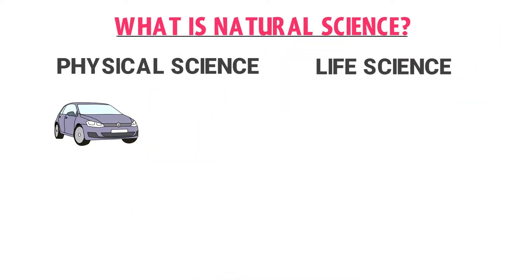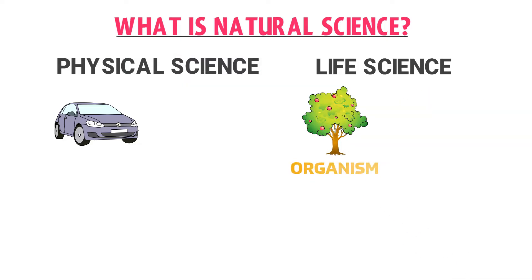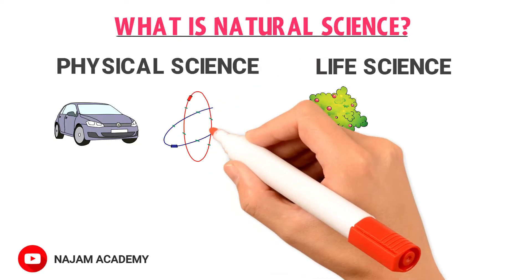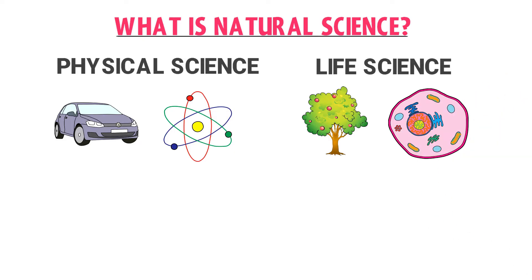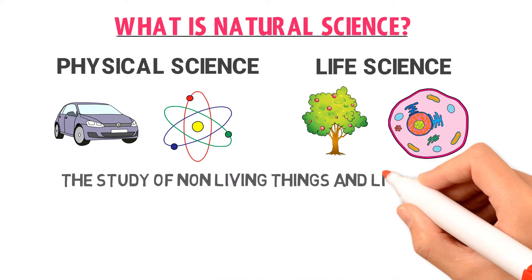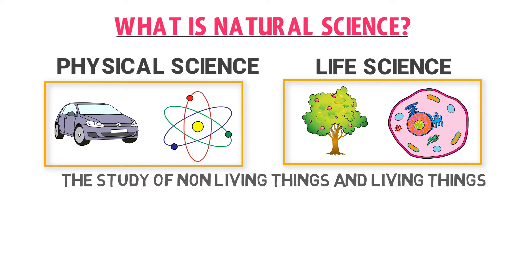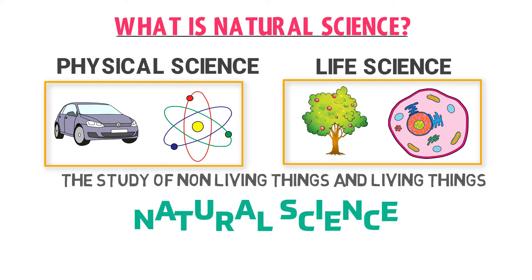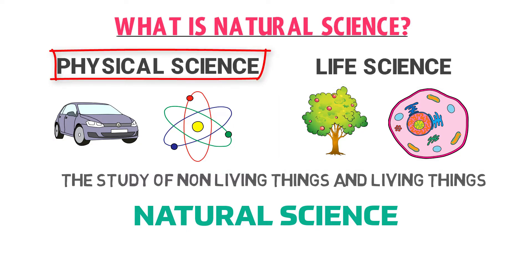For example, a car is matter — we study and construct it in physical science. A plant is a living organism — we study it in life science. Similarly, we study an atom in physical science while we study human beings in life science. Thus, the study of non-living things like matter and energy, and living things like animals and plants, is known as natural science.